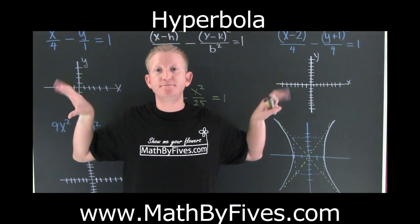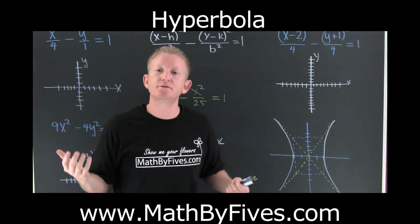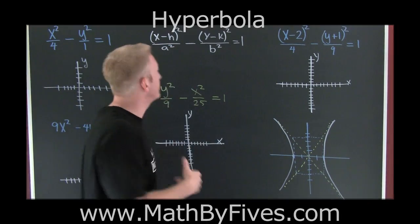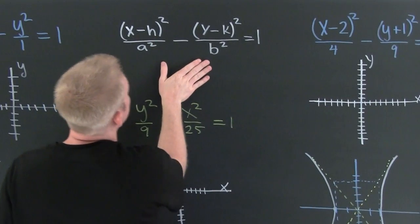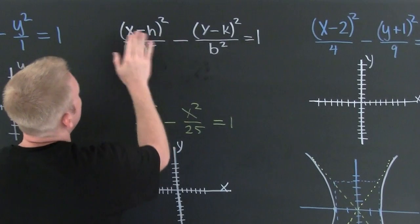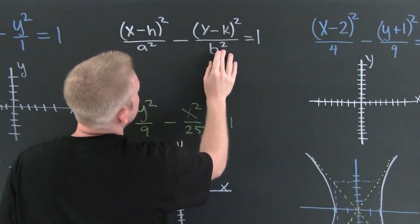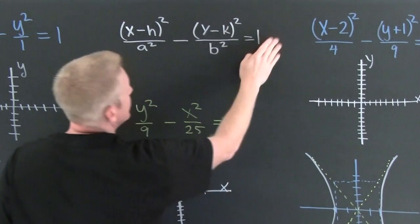The hyperbola. The general form of a hyperbola is x minus h over a squared, y minus k over b squared, and then it's equal to one.